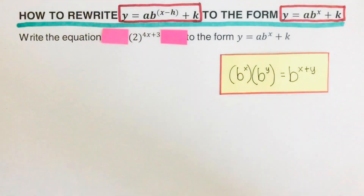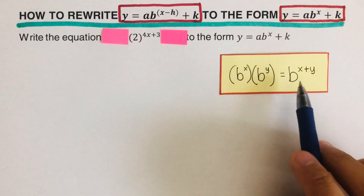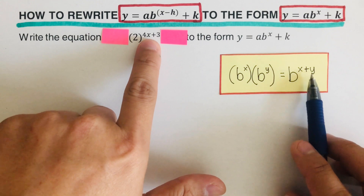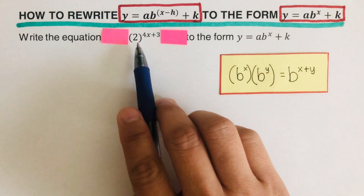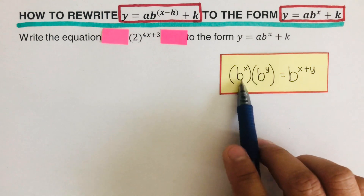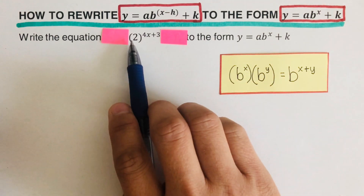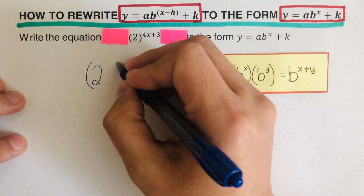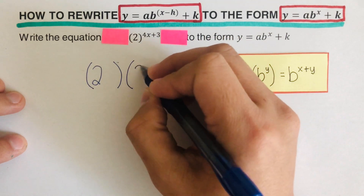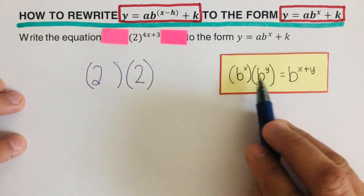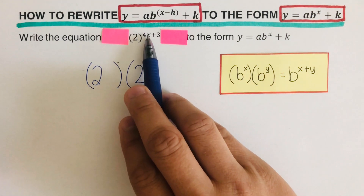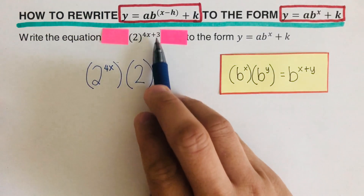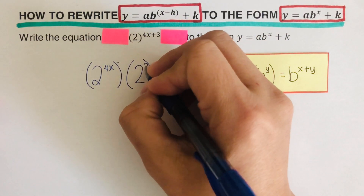We can use this property of exponents on this part of the equation. Our base b is 2, the x-part is 4x, and the y-part is 3. So we can rewrite this expression by writing 2 twice — one raised to the power 4x and the other raised to the power 3.